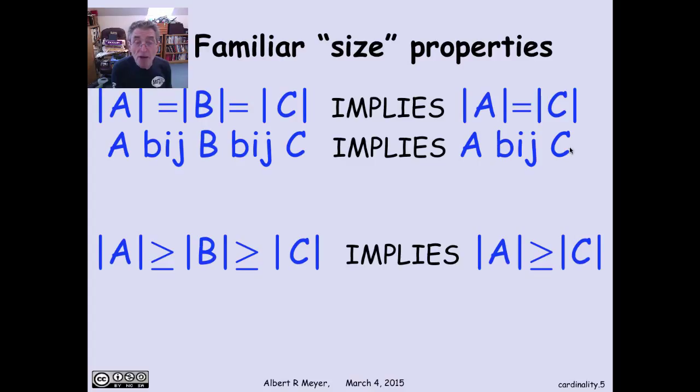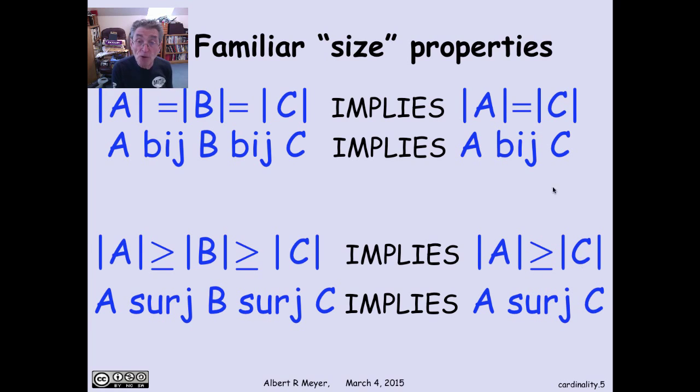The similar property applies to at least as big as, greater than or equal to. For finite sets, if A is greater than or equal to B, and B is greater than or equal to C in size, then A is greater than or equal to C. And actually, the same argument that worked for equal, for Byge works for surge, because the composition of surjection, of surjective functions is a surjective function. So if A surged B and B surged C implies A surged C.